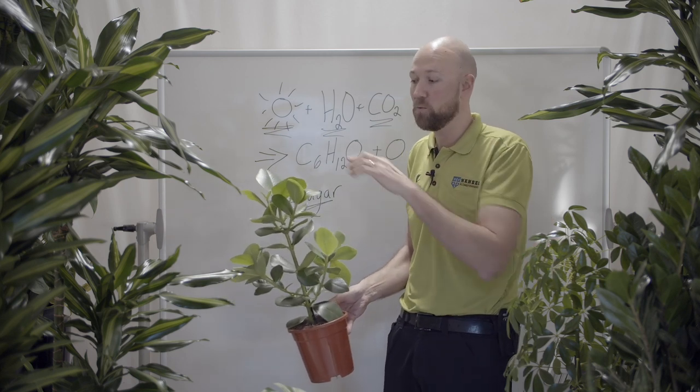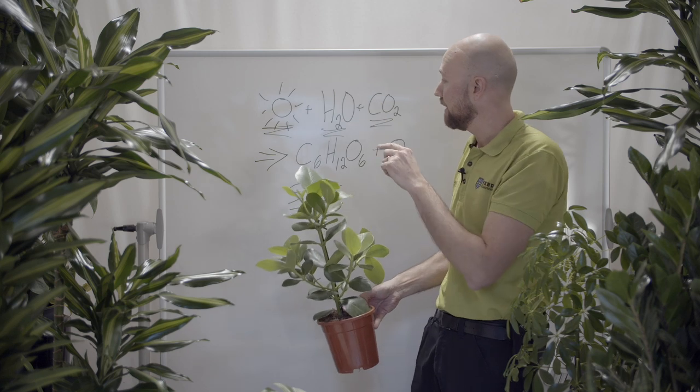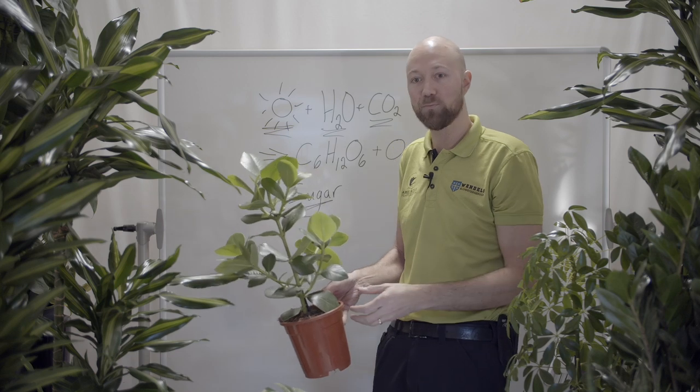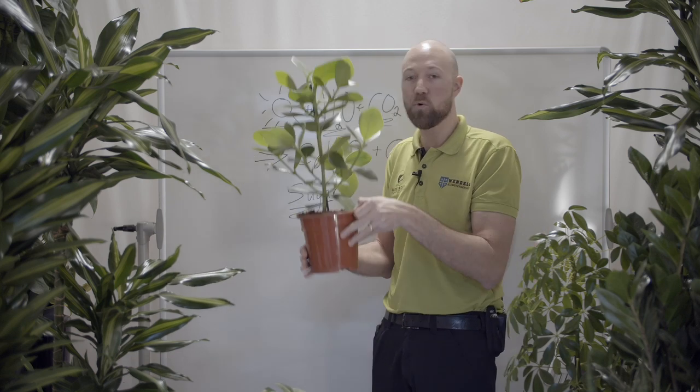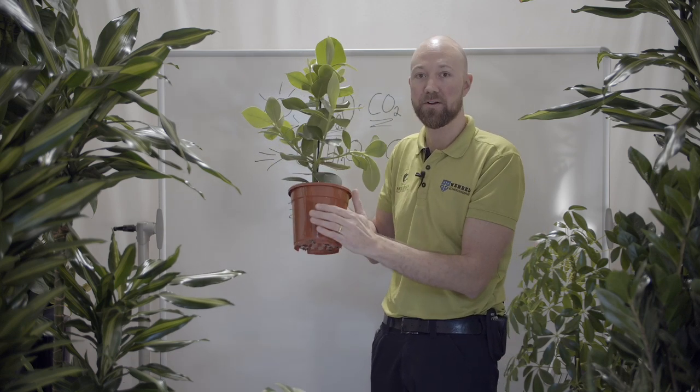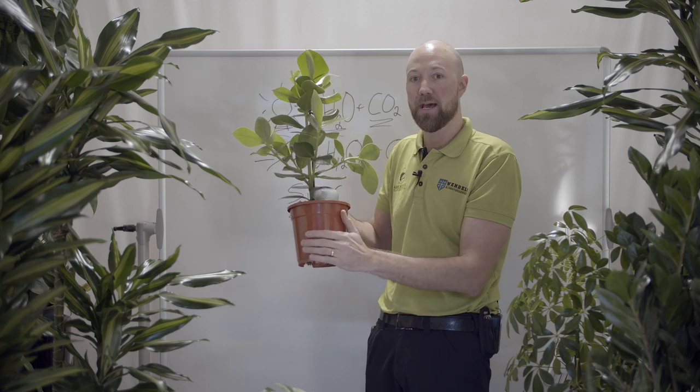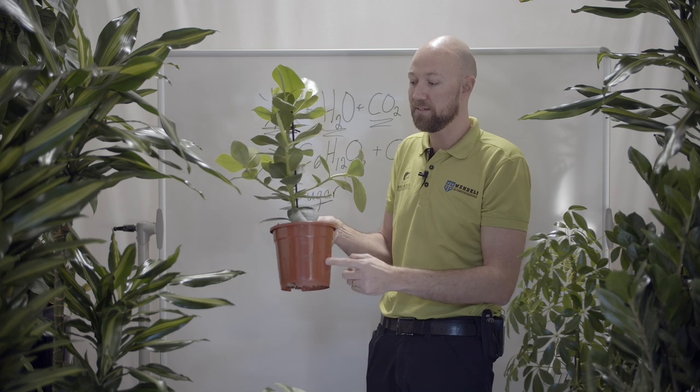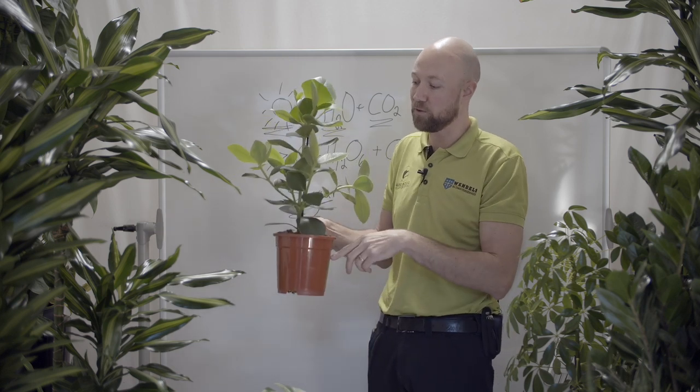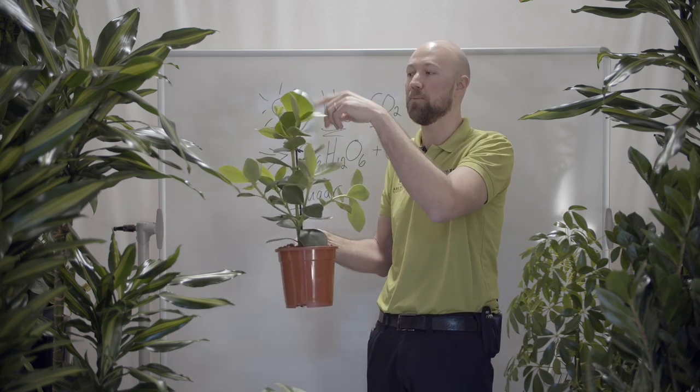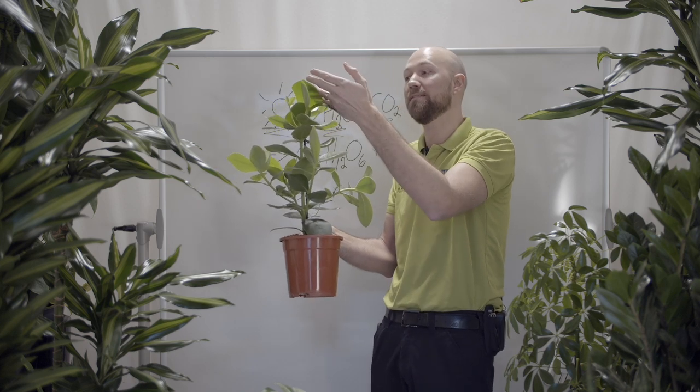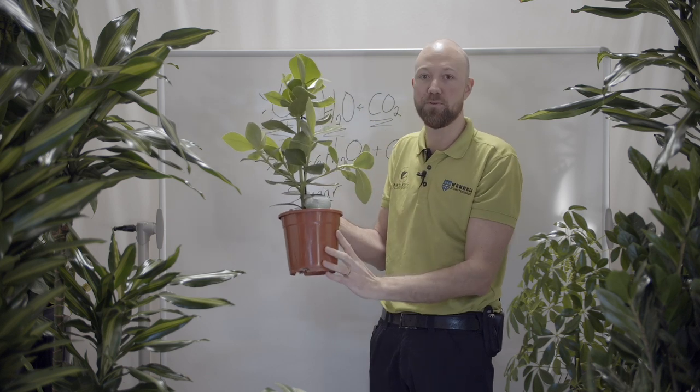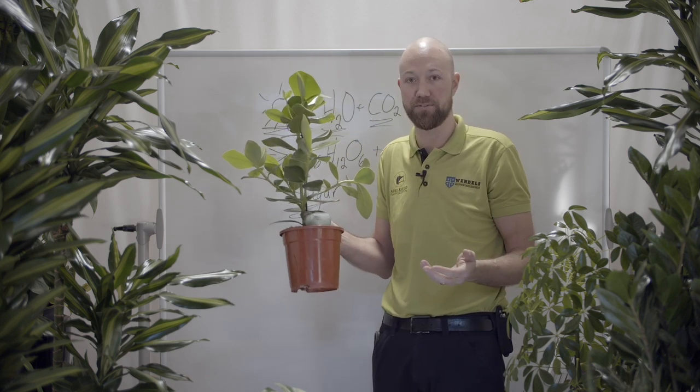But when it gets more leaves, and it sucks up the light and the carbon dioxide, it also needs more water. And the water comes from down here. It comes from the roots. And therefore, we need a transport system. We need something that can transport the water from the roots up to the leaves. And then take the light and carbon dioxide, the energy, creating sugar, take it down to the roots again. So we need a transport system.